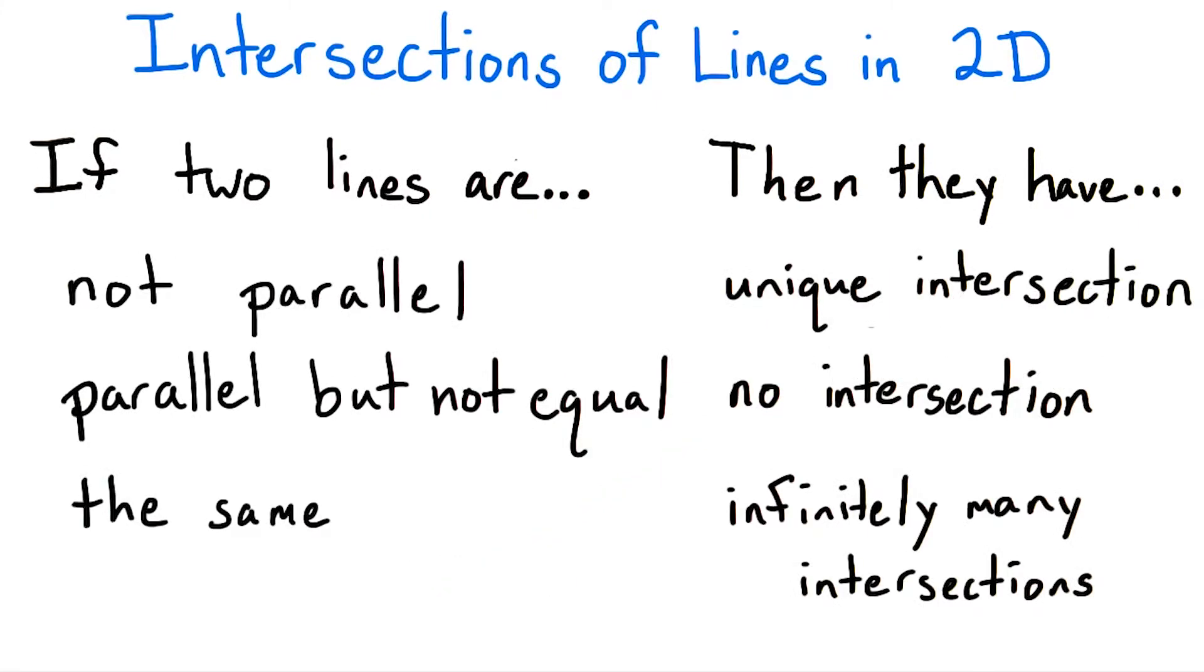In linear algebra, this trichotomy of cases for intersections is the rule. When asked whether two linear objects intersect, the answer is that there will either be a unique point of intersection, there will be no common intersection, or there will be infinitely many intersection points. There cannot just be two or three intersections.